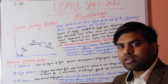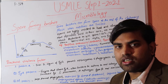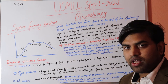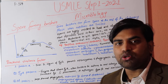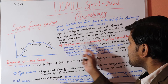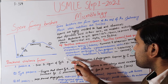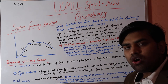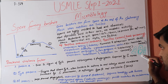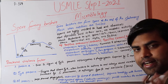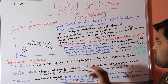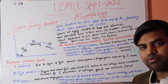Bacteria that encounter harsh conditions — such as nutrient deficiency — convert into spores. Spore-forming bacteria are only gram-positive bacteria. The key species to remember are Bacillus anthracis, Bacillus cereus, Clostridium tetani, Clostridium difficile, Clostridium perfringens, and Clostridium botulinum. Only gram-positive bacteria form spores, and among them, only Bacillus and Clostridium species are medically important.